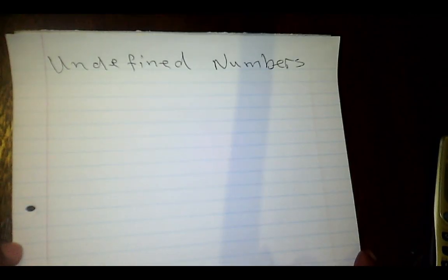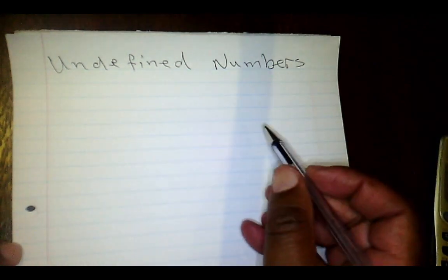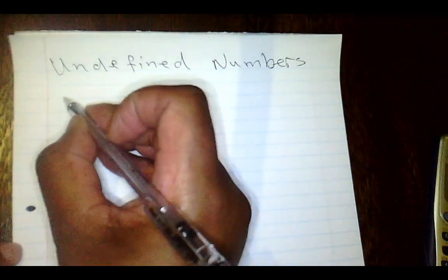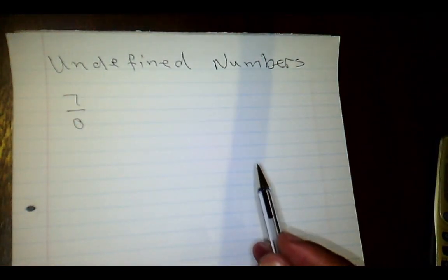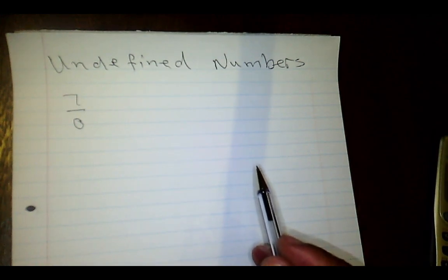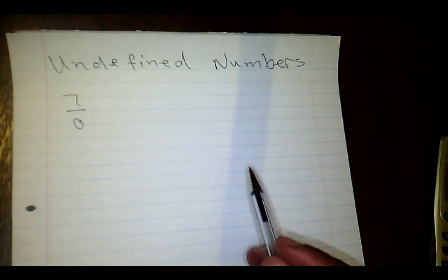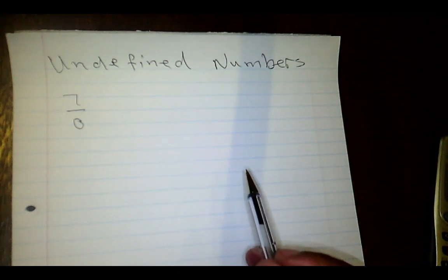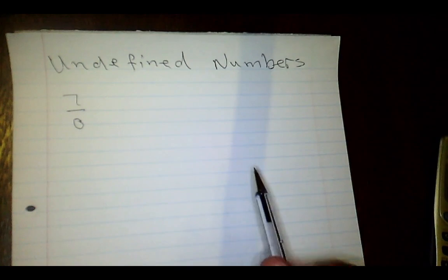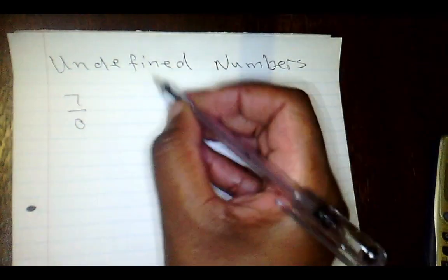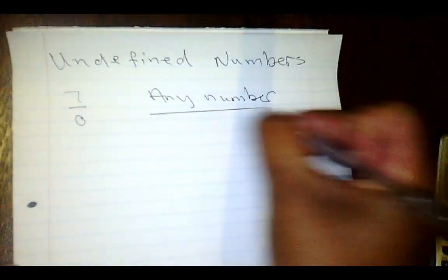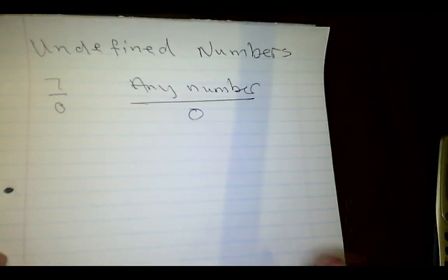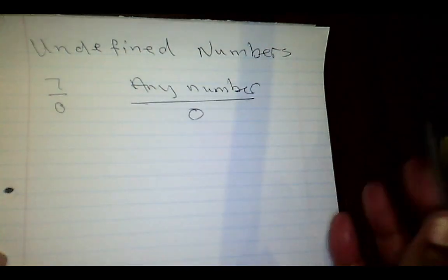What about undefined numbers? An example of an undefined expression is 7 over 0. This is not really a number — it's undefined. You won't find it in the real number set or the non-real number set. If you take any number and divide it by zero, the result is undefined.